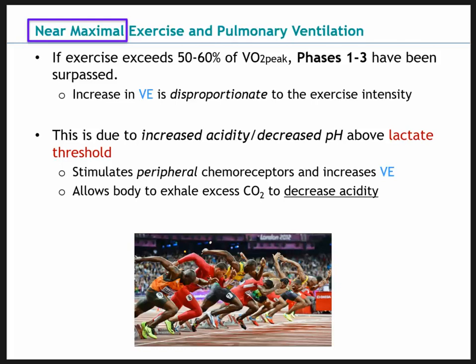The increase in ventilation during near maximal exercise is also due to increases in norepinephrine and epinephrine — the fight-or-flight response. If you're sprinting as fast as you can, your body doesn't know the difference between running a race or running from danger, so those hormones are present. Body temperature also increases rapidly, which is another factor that increases breathing.